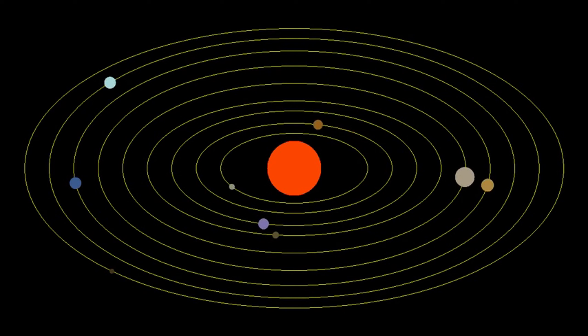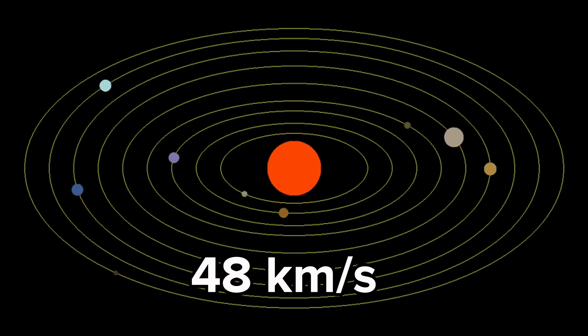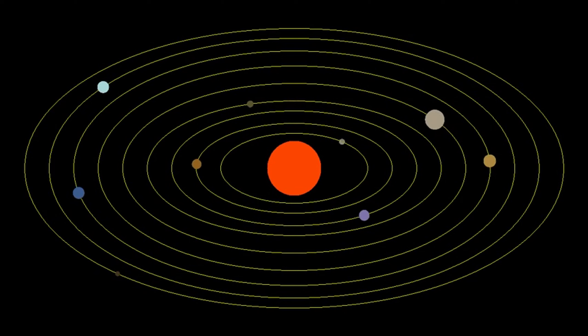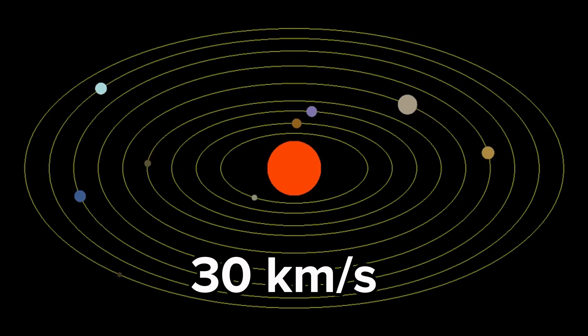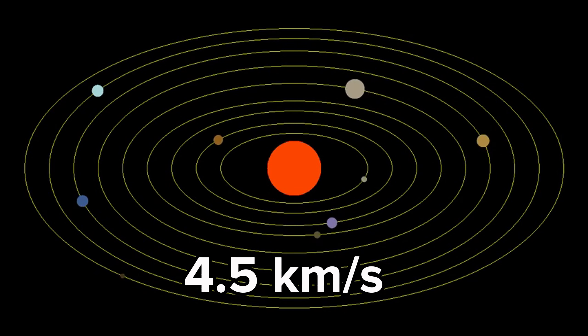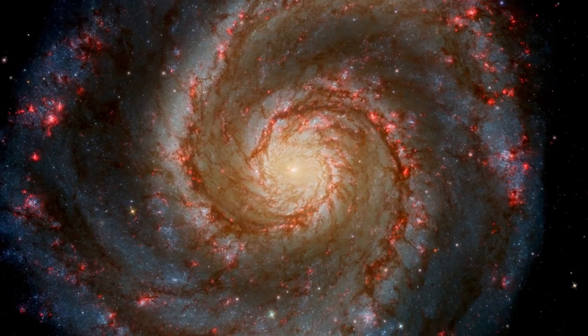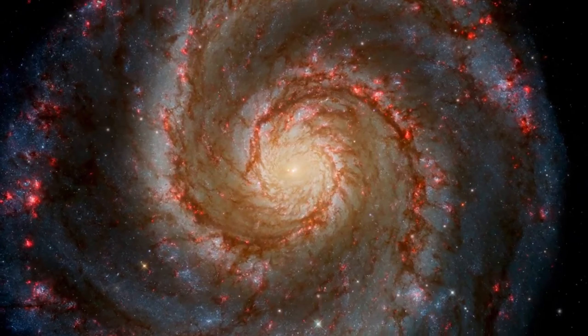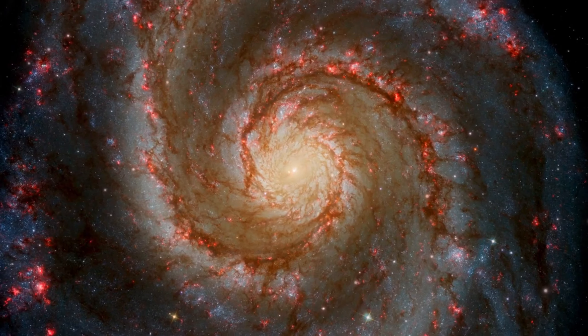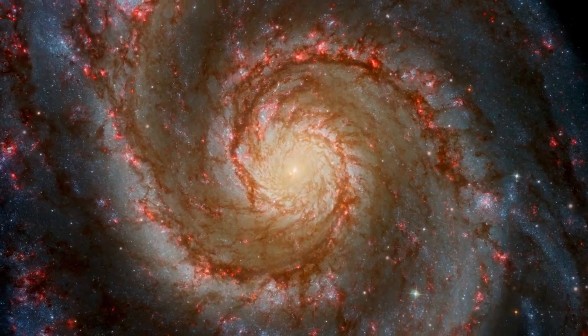For example, the average orbital speed of Mercury is 48 kilometers per second, while the average orbital speed of Earth is 30 kilometers per second, and Pluto's is even just 4.5 kilometers per second. A similar dependence was expected for the motion of stars around the galactic center. But the same speed of stars at all distances from the center of the galaxy contradicts this dependence.